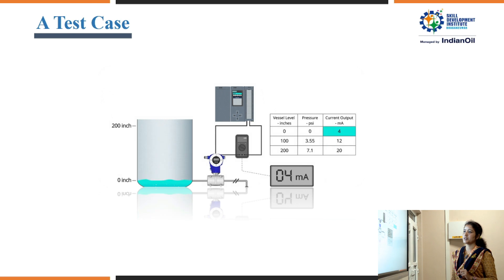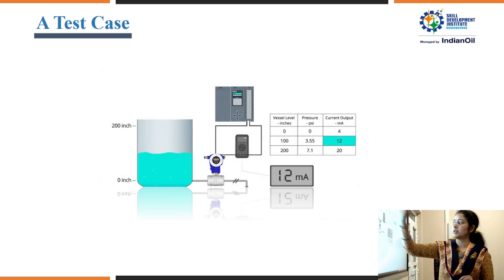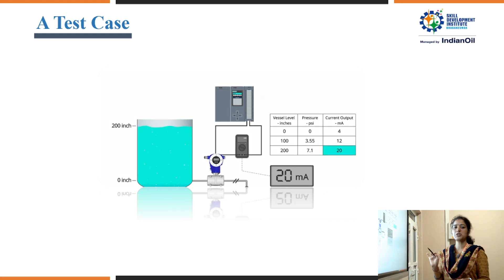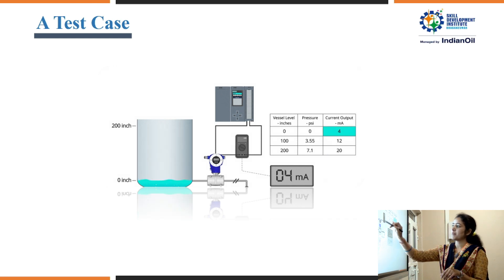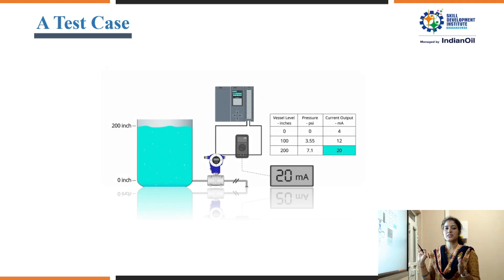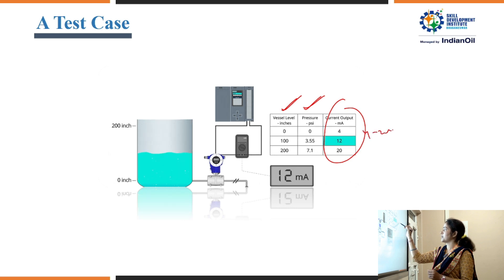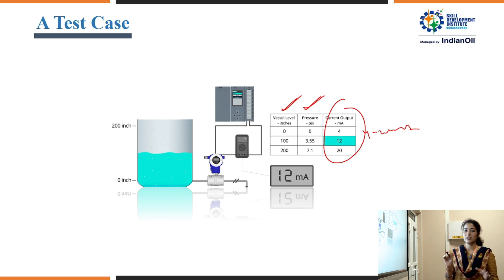As a practical example, consider a tank being filled with liquid. The level increases from zero to 200 inches, and a pressure transmitter checks how much pressure builds as the liquid level rises. Pressure is a physical, non-electrical quantity that must be converted to an electrical quantity when it reaches the controller — this conversion is done by a transducer, which converts the non-electrical quantity to an electrical current in the range of 4 to 20 mA, and that signal is received by the controller to complete the process.